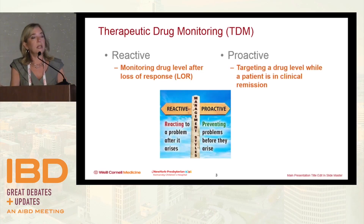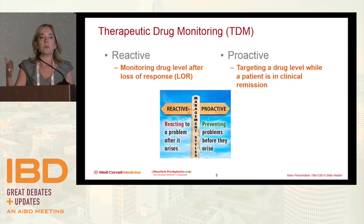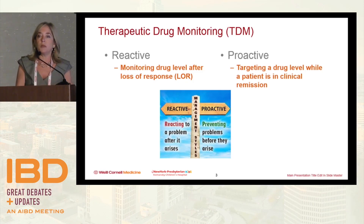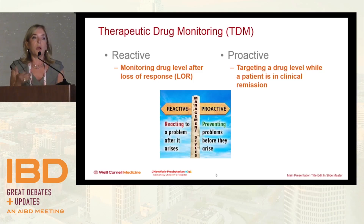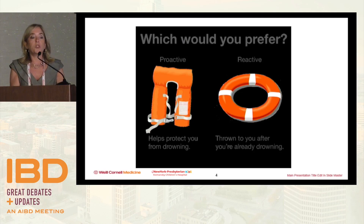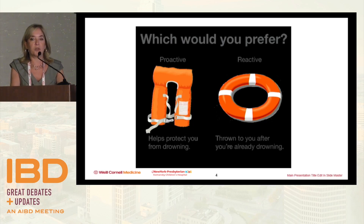Do we choose reactive monitoring — just responding to something, so a patient begins to get some symptoms, maybe increased stools, becoming more anemic, CRP is up — or maybe before any structural damage, do we say to ourselves, how could we potentially prevent some structural damage? That would be targeting a drug level while they're actually in clinical remission. Would you like somebody to throw you a life tube, or would you like somebody to say you should put a life jacket on? I think proactive monitoring is the way to go.